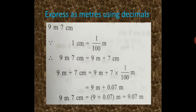Next, how to express as meters using decimals? Here, 9 meter 7 centimeter. As we all know that 1 meter is equal to 100 centimeter. Therefore, 1 centimeter is equal to 1 upon 100 meter. 9 meter 7 centimeter is equal to 9 meter plus 7 centimeter, which is equal to 9 meter plus 7 into 1 upon 100 meter, equal to 9 meter plus 0.07 meter.